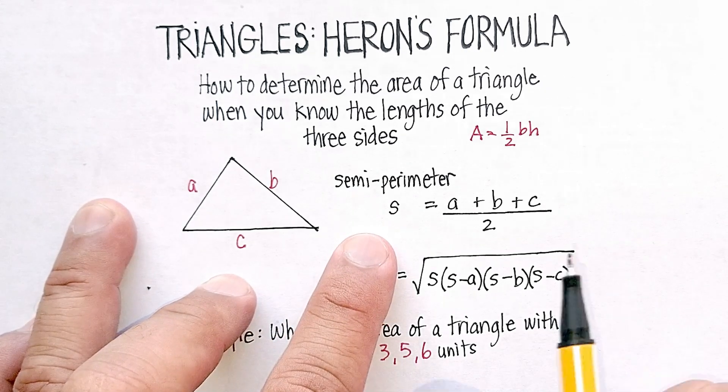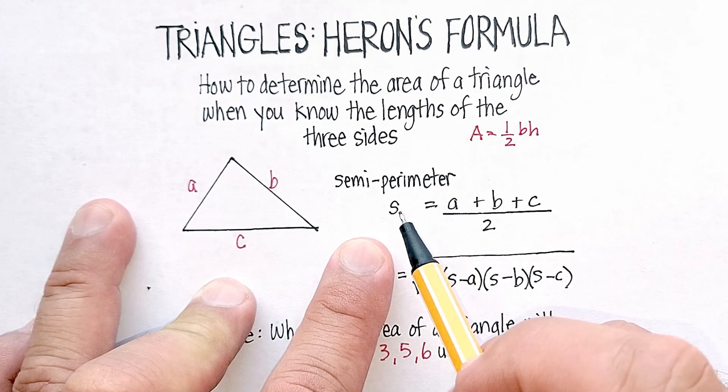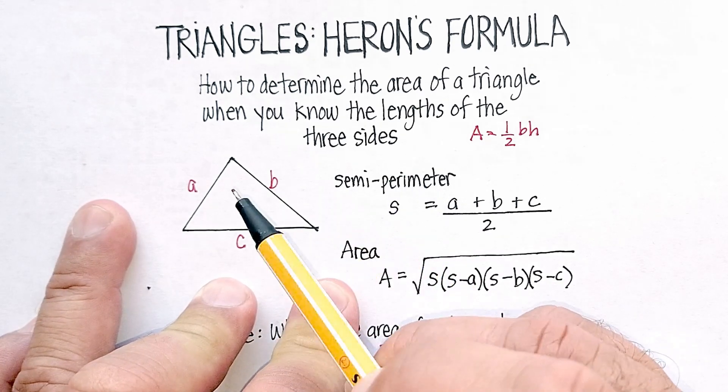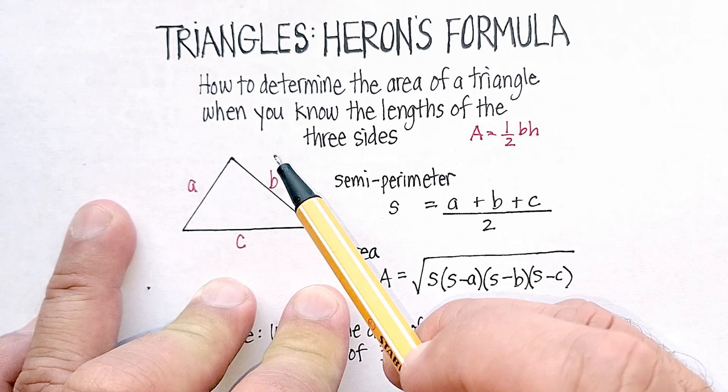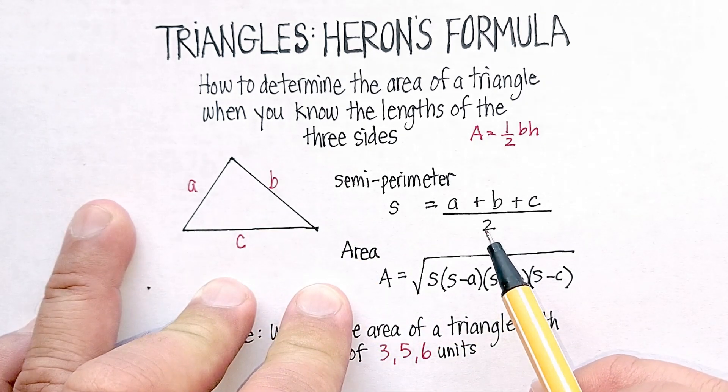Now the first thing that he discovered was that you need to find what's called the semi-perimeter, which we label as S. And the semi-perimeter is basically just adding up all three of the lengths of the sides and then dividing by 2.